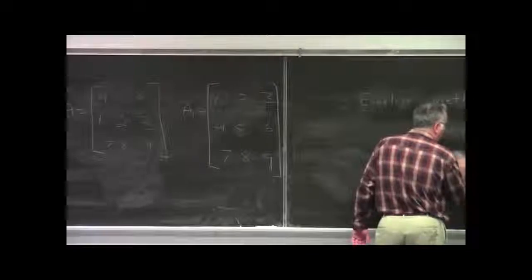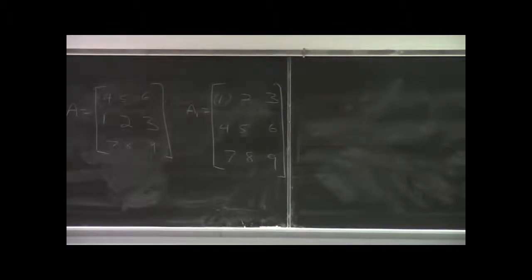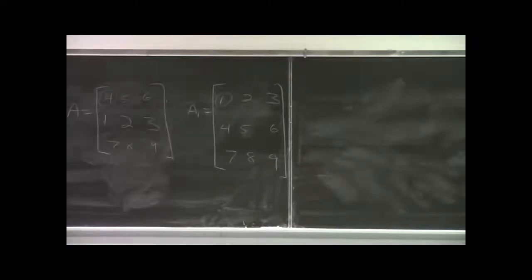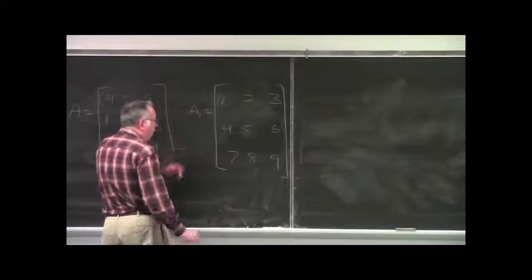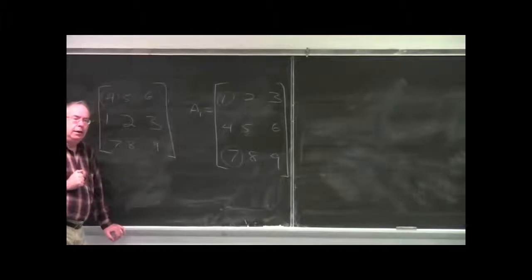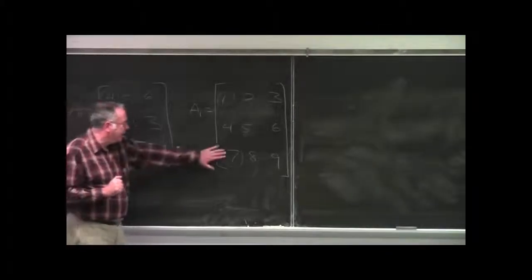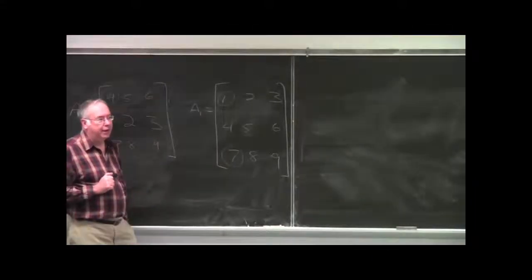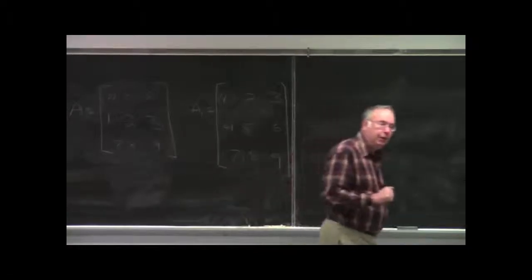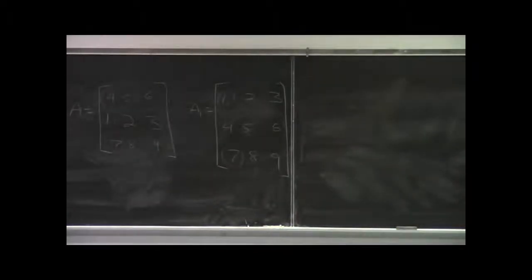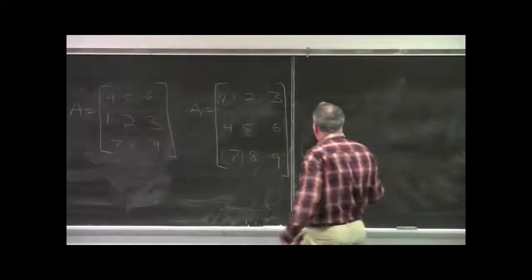Right. Multiply the first row by 4 and then subtract it from the second. Or, alternatively, multiply the first row by minus 4 and add it to the second. Same thing. So, let's do that. And, actually, let's do both. What would we have to do to make this element a 0? Yes. We're going to do negative 7 and then go to 1 and add it to the last row. Right. Alright. So, let's do both of those. And, we'll call this A2.